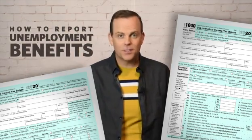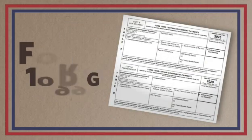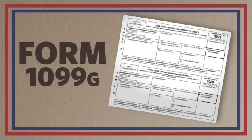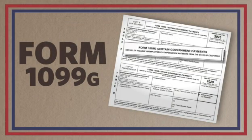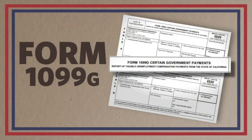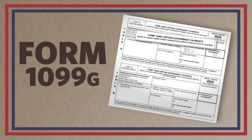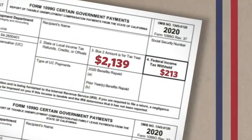Here's how to report unemployment income on your federal tax forms. First, you should receive a 1099-G form by mail. It looks a lot like a W-2, but it's from the state. The boxes below will show you how much you collected and how much the state took out in taxes, if any.